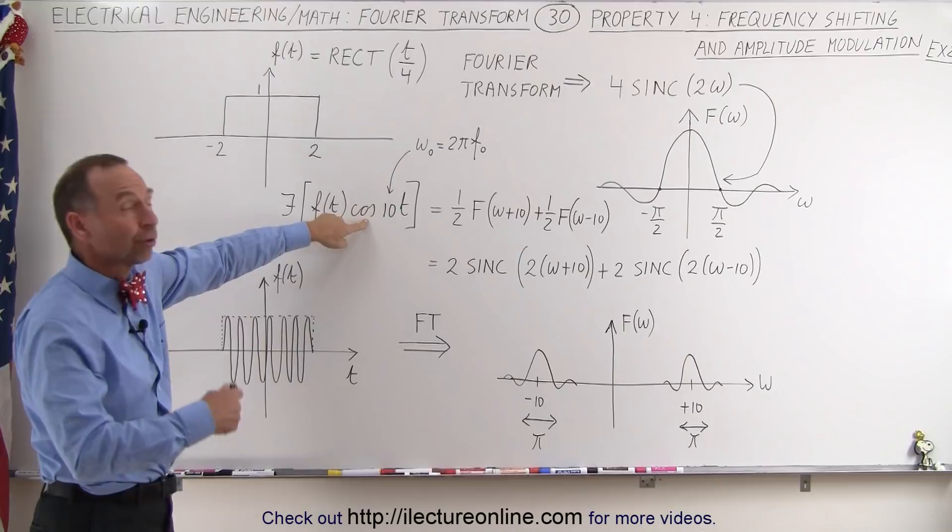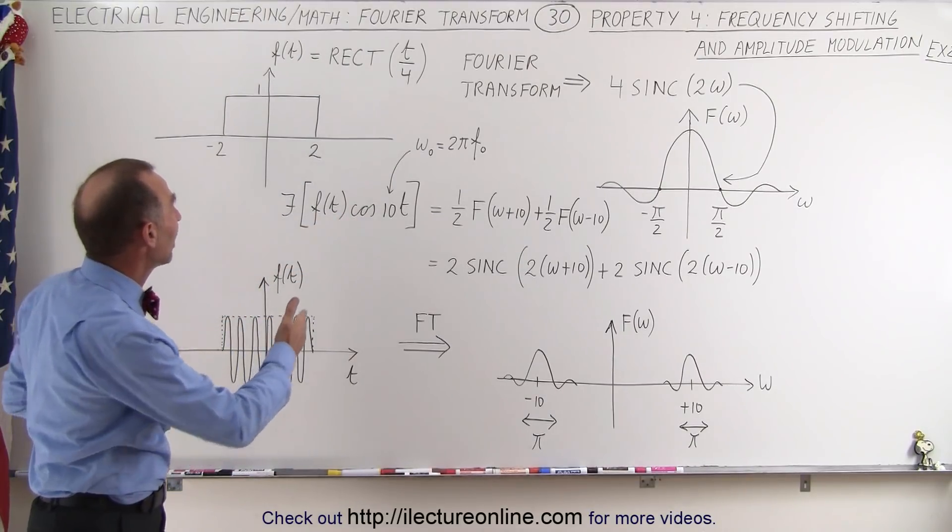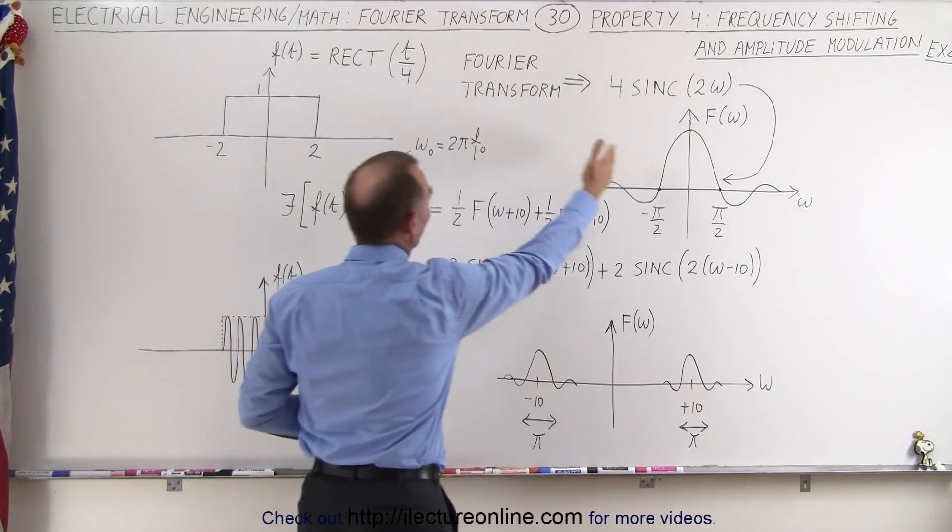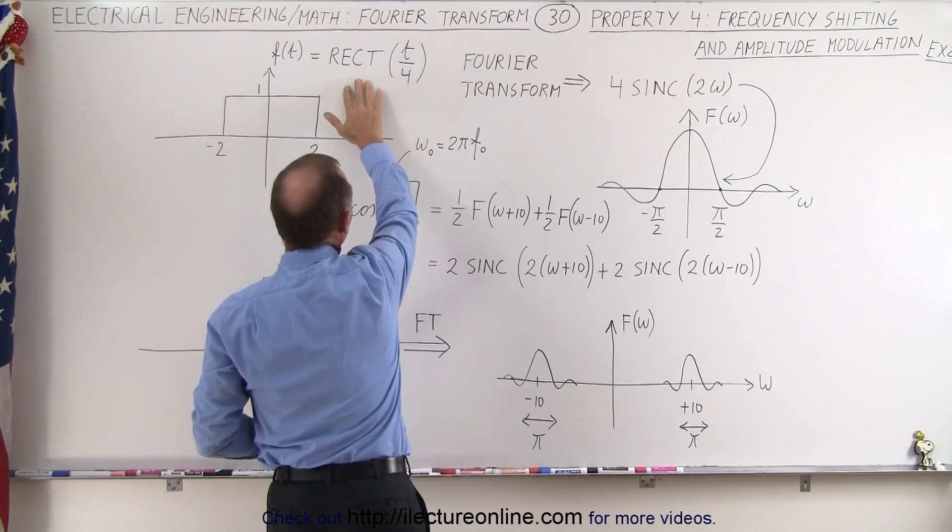Like the cosine function here in the time domain, and what happens then is the Fourier transform for a rectangular input function like this, called the rectangle function.